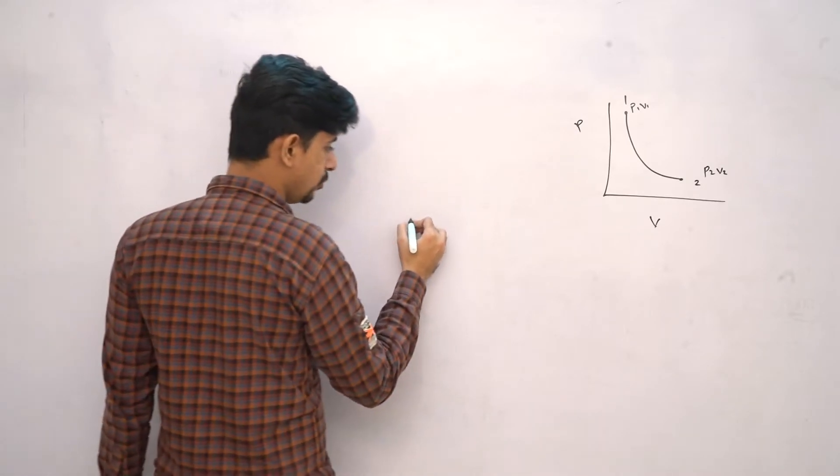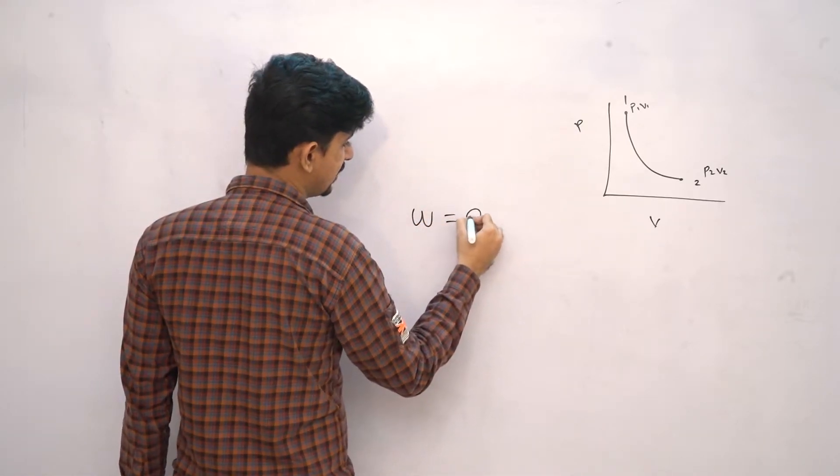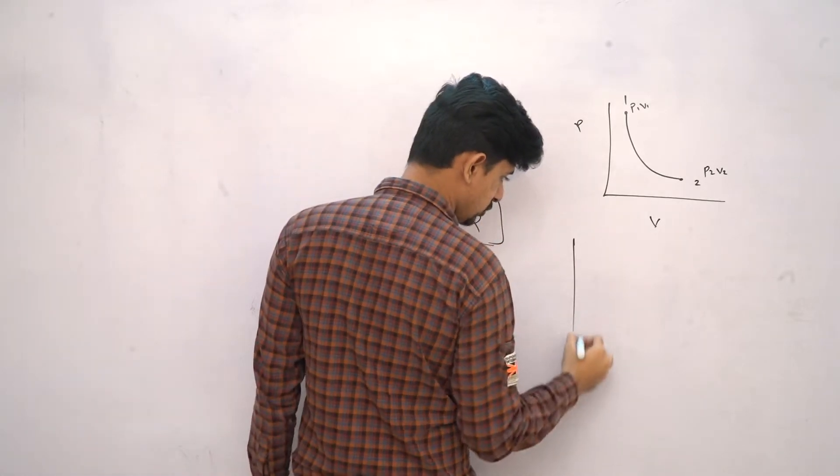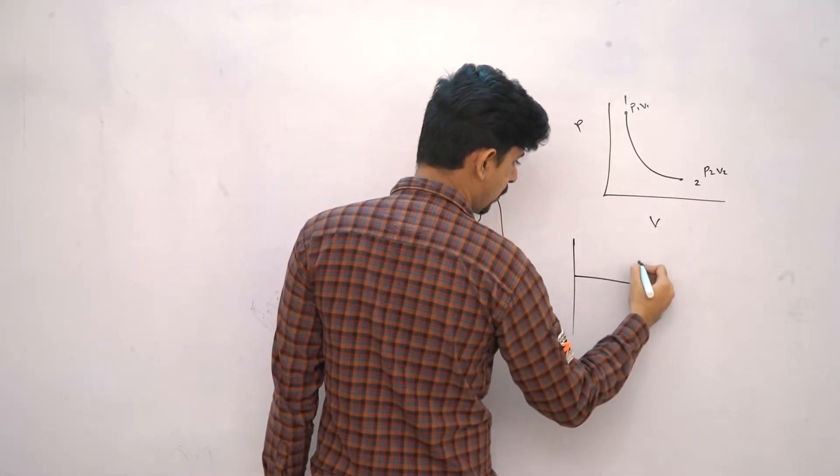But one thing which we know: since W is equal to Q, and the setup which we assumed for all the processes.